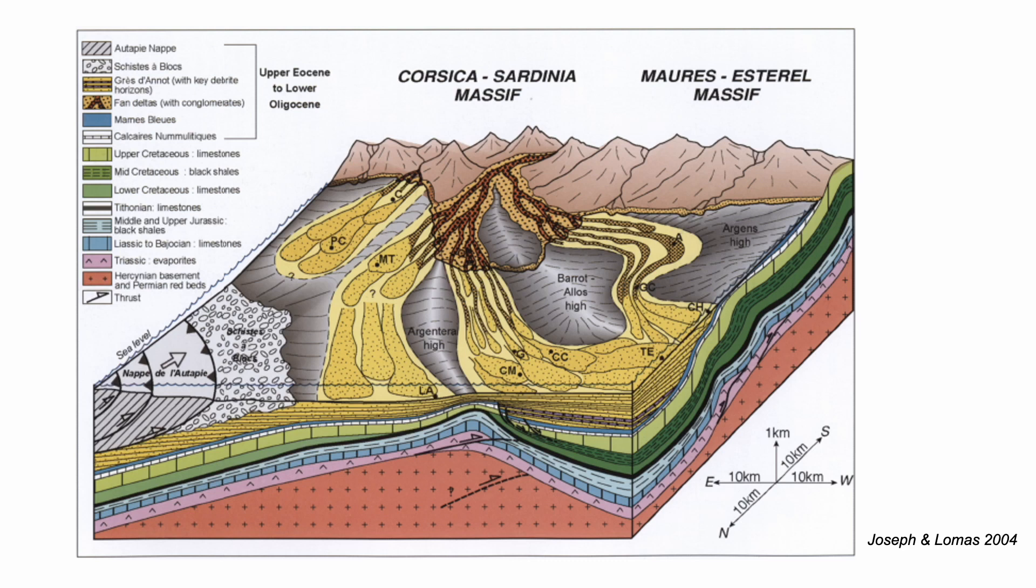For the last several decades, this has been the conceptual understanding of the Annot system. Submarine sands deposited in narrow, structurally controlled conduits. And the sand originates in the south, eroded from basement rocks exposed along the modern Mediterranean coast, and from Corsica, which at that time lay directly offshore mainland France.